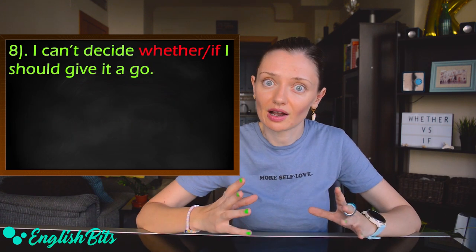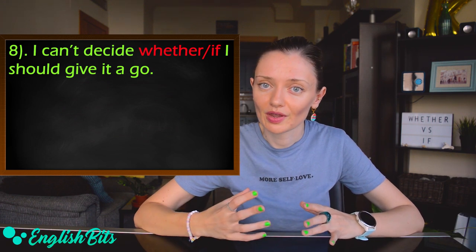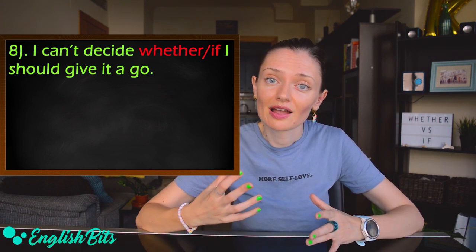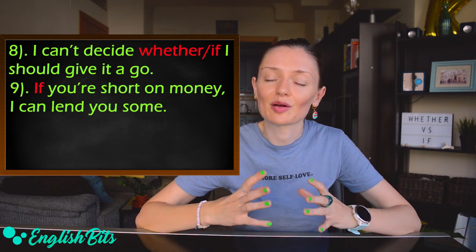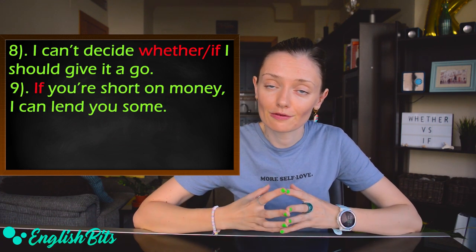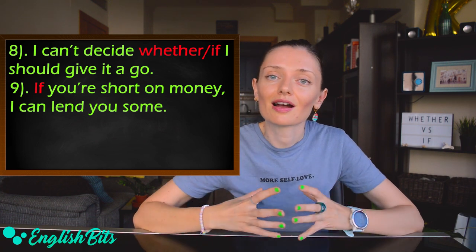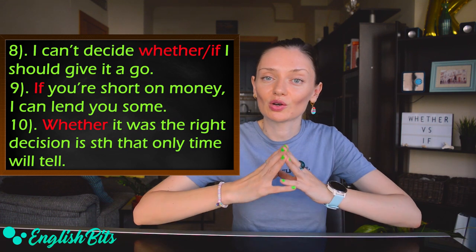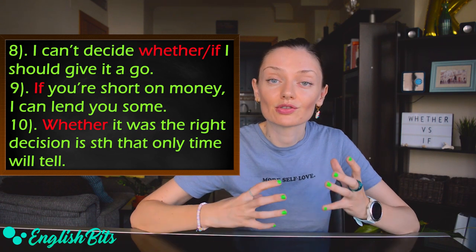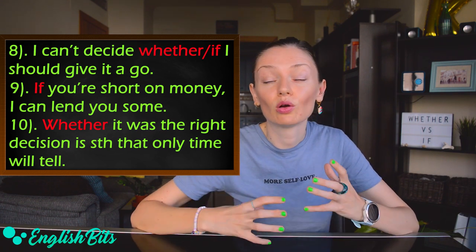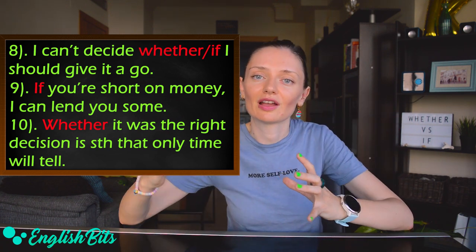Number eight: both options are correct. 'I can decide whether/if I should give it a go' — the same, we have a verb of doubting. And remember that 'to give it a go' means to try to do something. Number nine: the only correct option is 'if', because we've got a conditional sentence: 'If you're short on money, I can lend you some.' And last but not least, number ten: the correct option is 'whether'. 'Whether it was the right decision is something that only time will tell', because 'whether it was the right decision' is the subject.